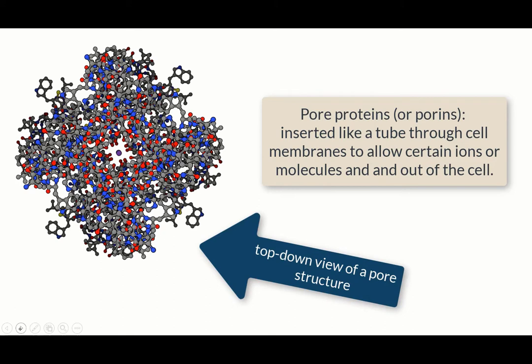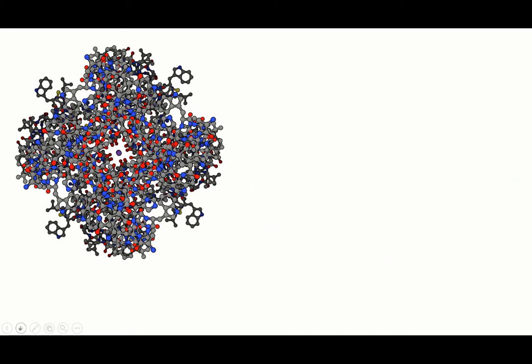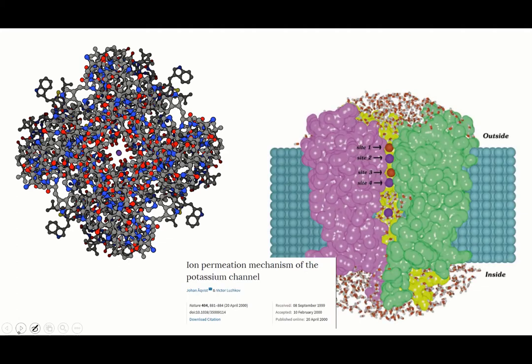To do their job, these pores have to be able to separate different kinds of ions. Each one transports a very specific ion. For instance, the KCSA pore in bacteria transports potassium ions, but not sodium ions. The weird thing is, potassium ions are bigger than sodium ions, so it's not just acting like a sieve.